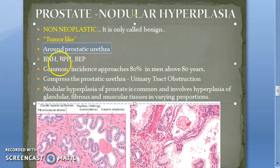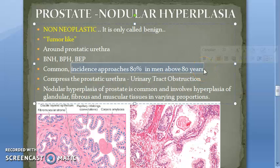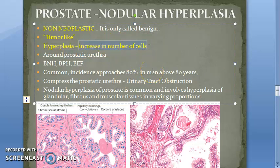This is a very common condition. In an 80-year-old person, the chances of finding BPH are 80%, so it is important exam-wise as well. Hyperplasia means an increase in the number of cells. There is no other abnormality — no dysplasia — the cells are all normal and simply more in number.